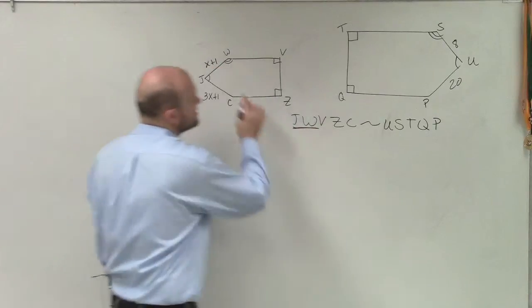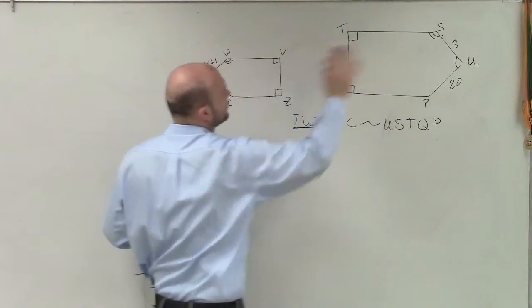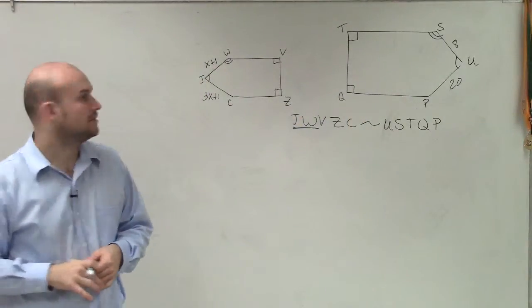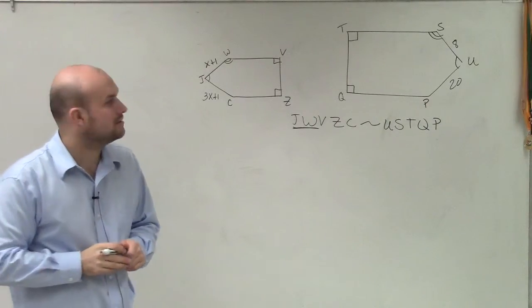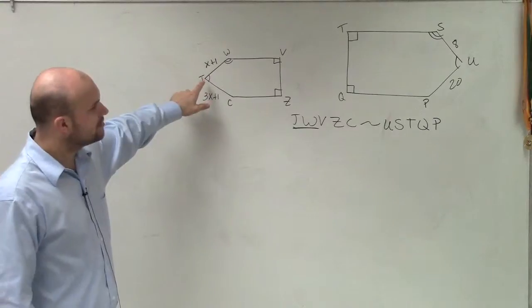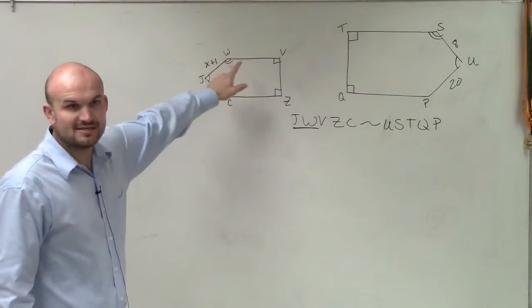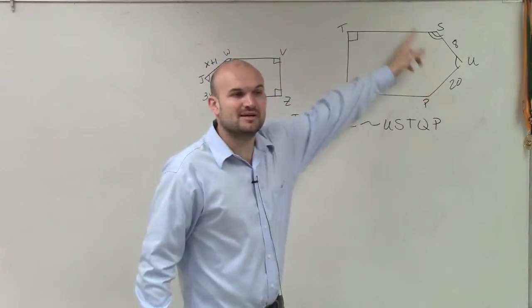I want to be able to see what side is JW similar to, that I can write a proportion for. So JW is similar to what side over here? U, S, U. U, S, or SU. Which one is it? U, S, U. Because S is up. All right. So J is to W as U is to S.